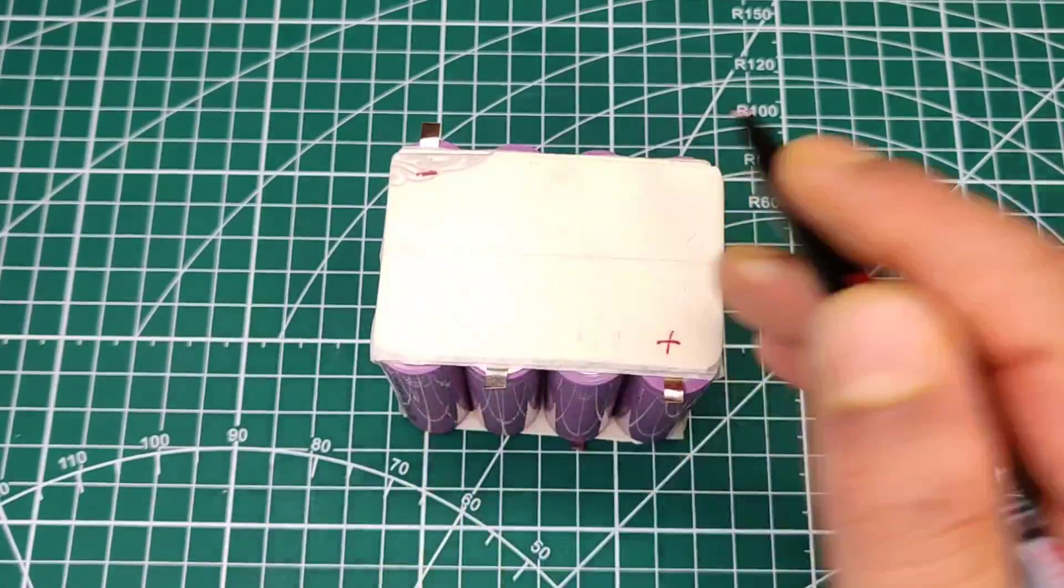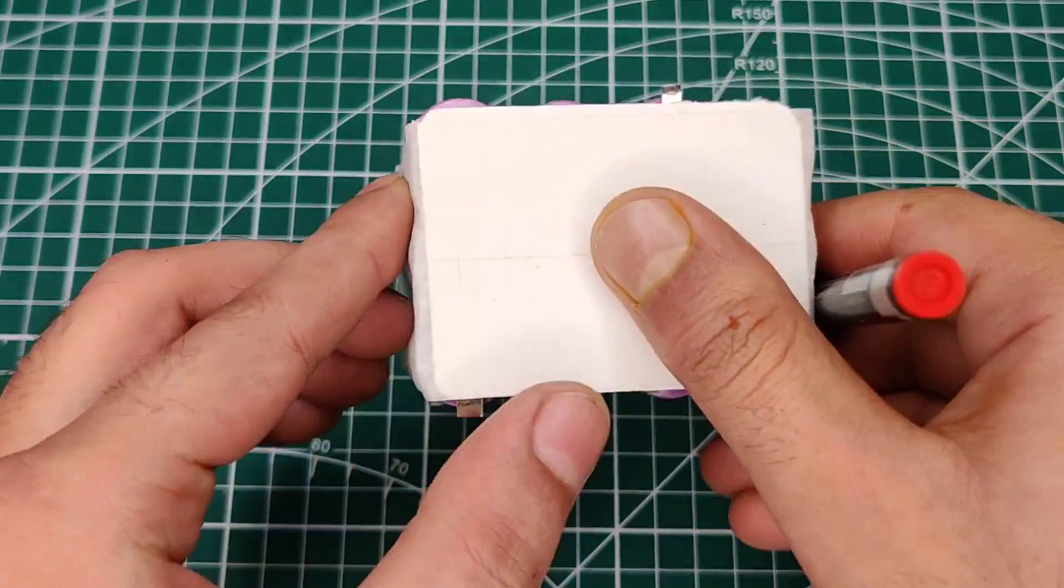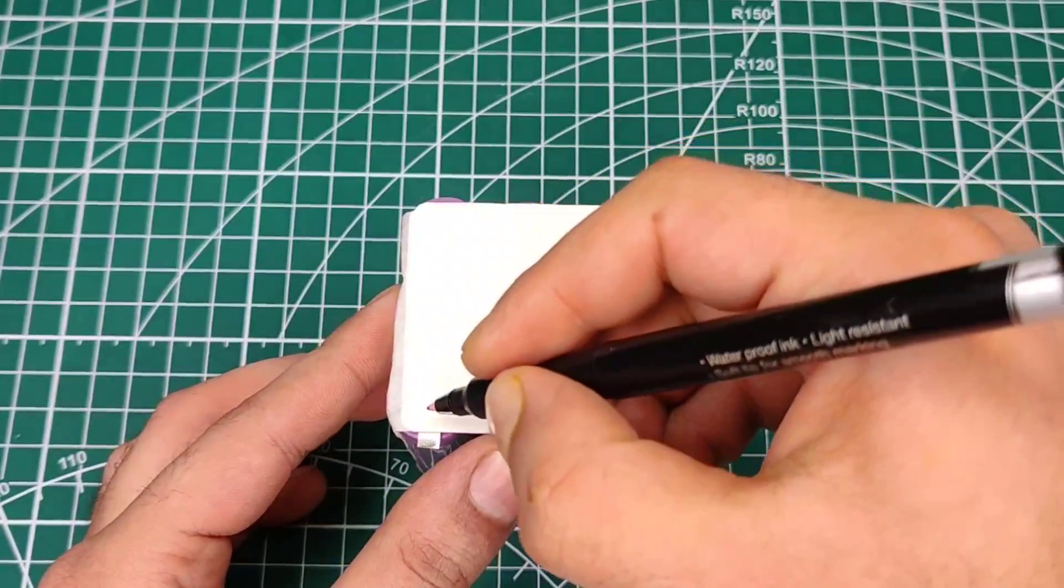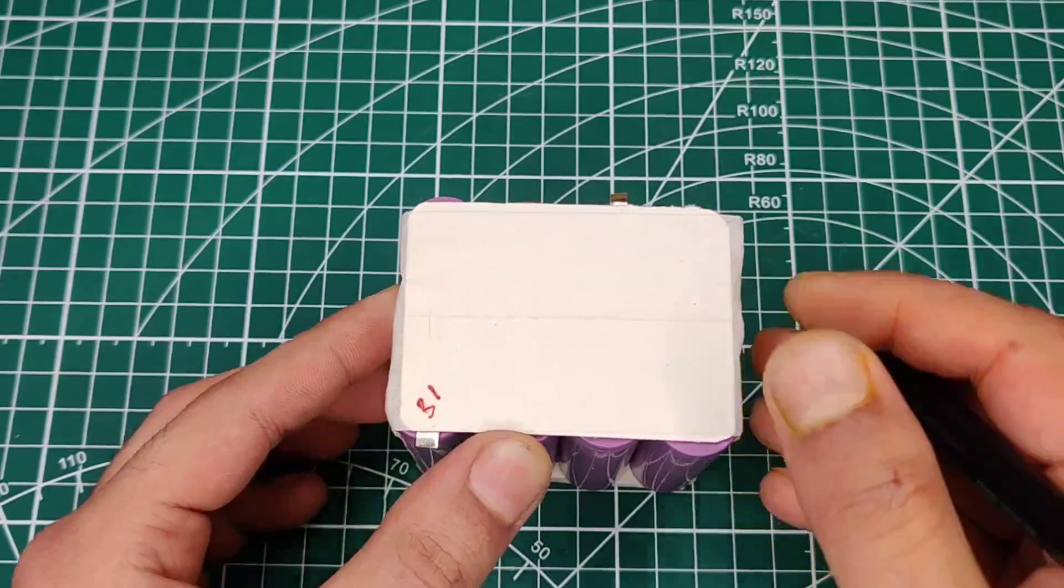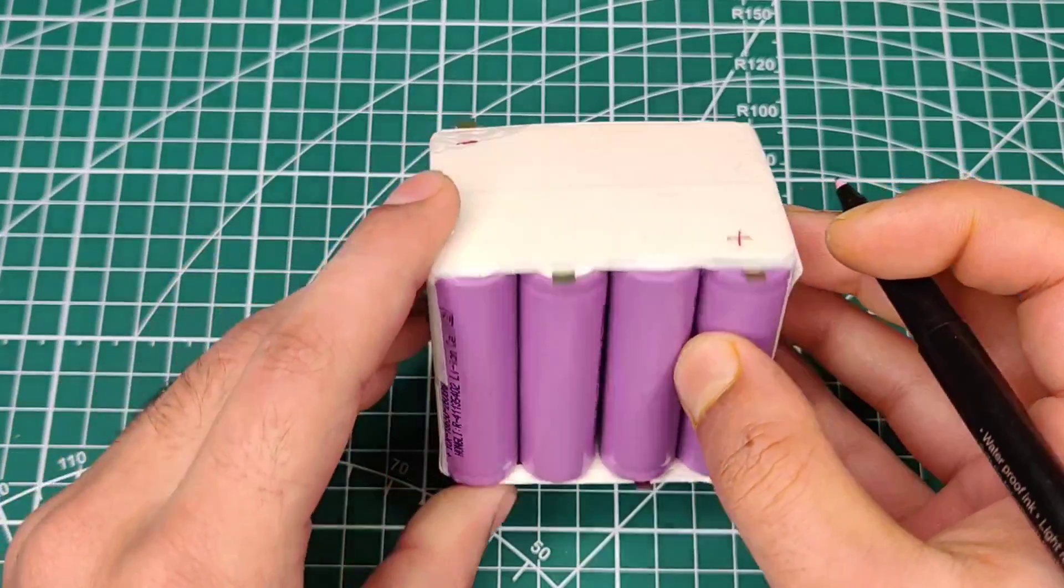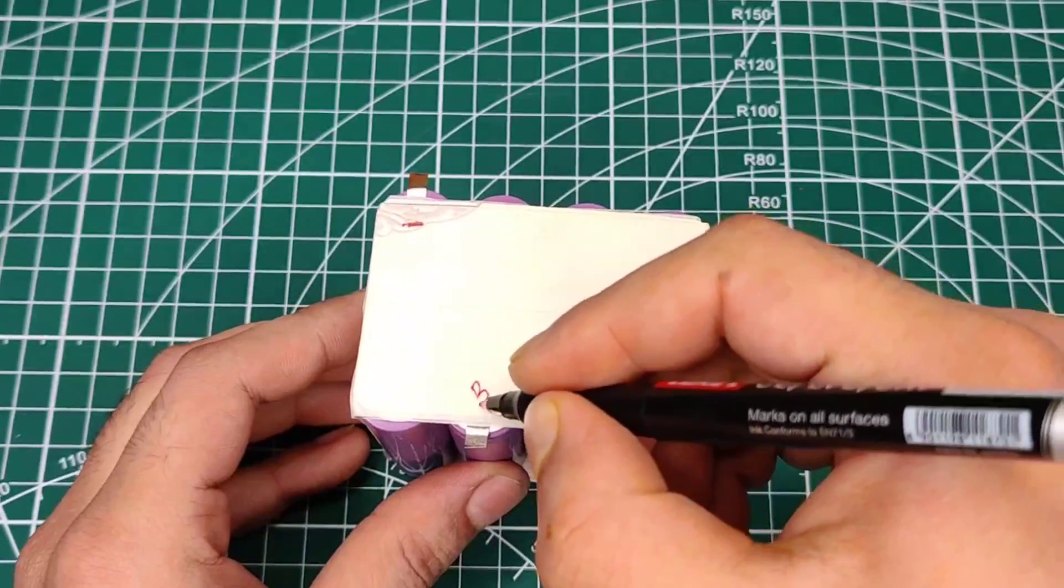This is battery negative. And positive of this first battery pack is connected with second battery packs negative, so here mark as B1. And second battery packs positive is connected with third battery packs negative, so here mark as B2.